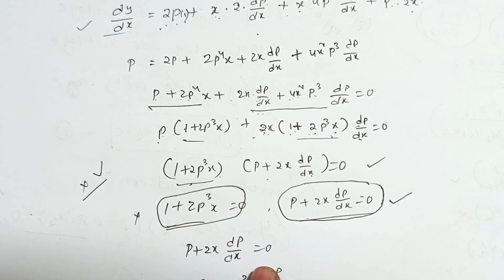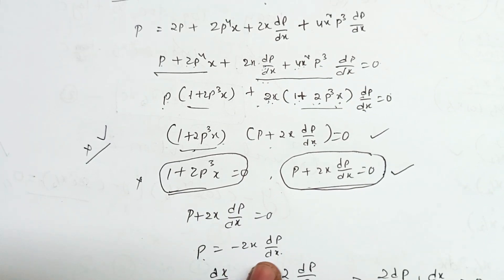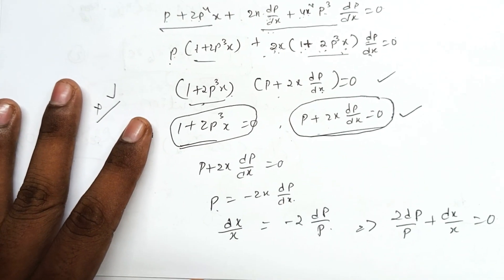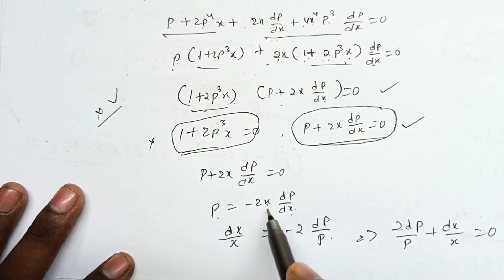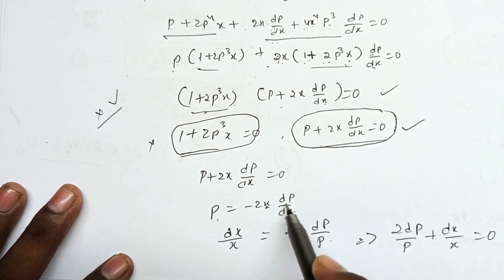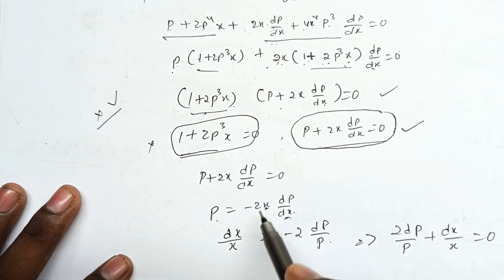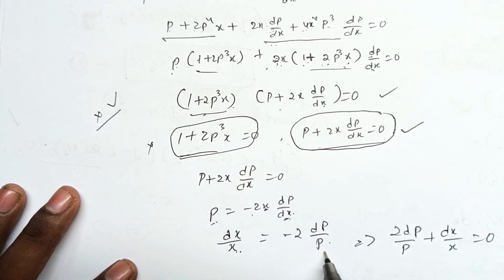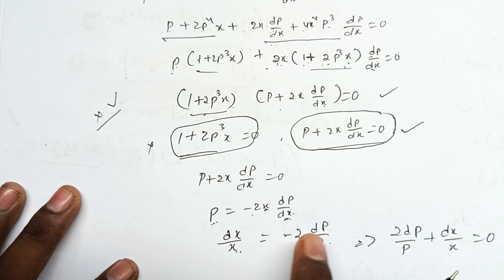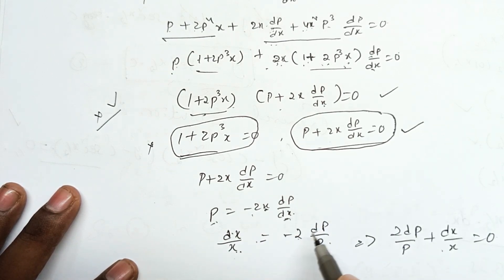P plus 2x dp by dx is equal to 0. Evaluate: minus 2x dp by dx. So, dx by x. Evaluate: dx by x. Minus 2 dp. Evaluate: dx by x plus 2 dp by p is equal to 0.